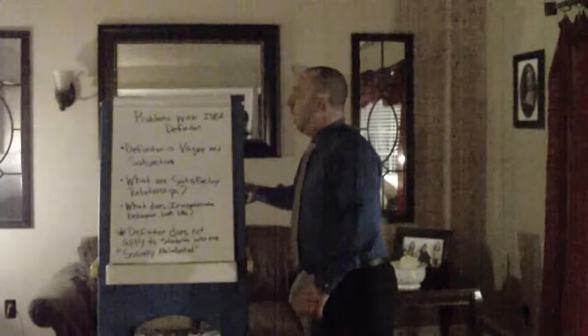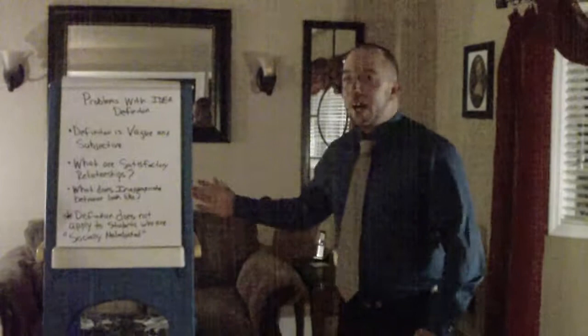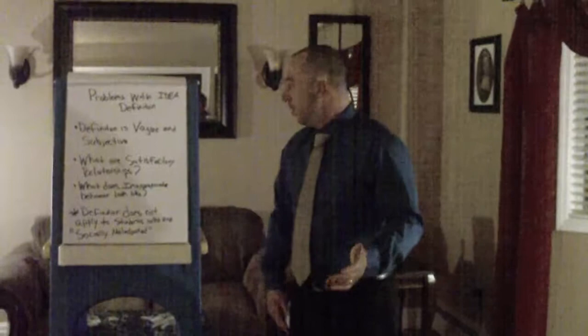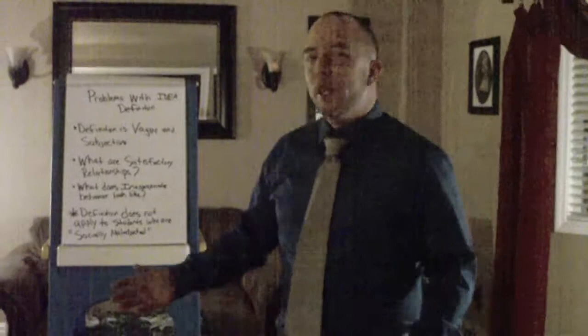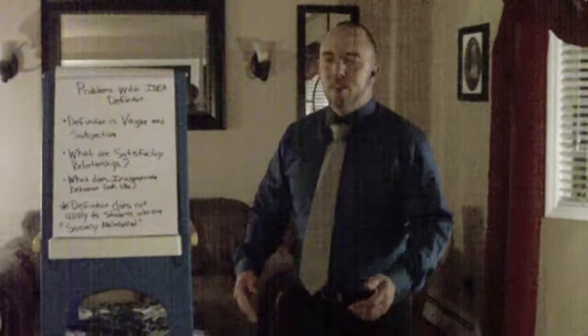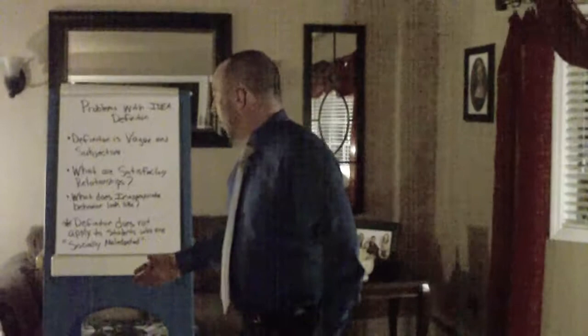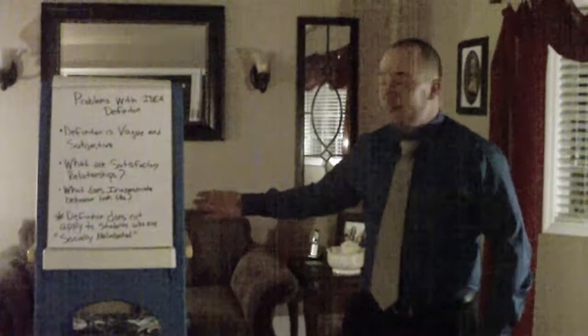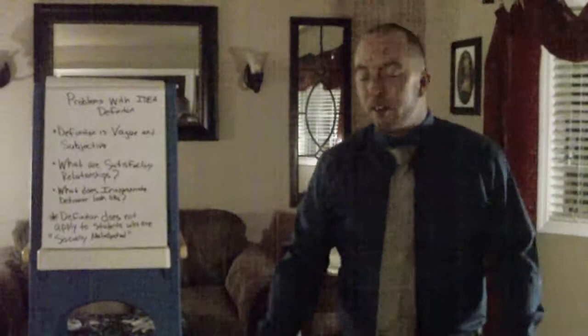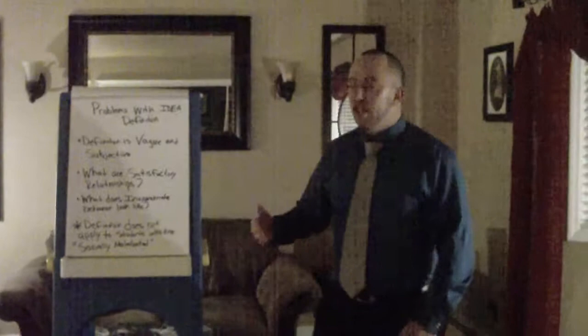There are problems with the IDEA definition. It's good that the federal government has acknowledged this as a disorder, but the definition is vague and a little subjective. What are satisfactory relationships? What does inappropriate behavior look like? The National Society of Psychologists defines it differently and does include students who are socially maladjusted, which the IDEA definition does not. It's still good that the federal government acknowledges it as a disorder that needs attention.